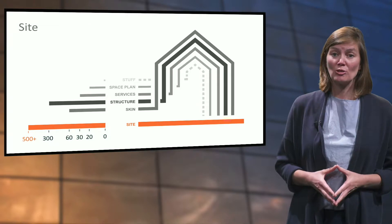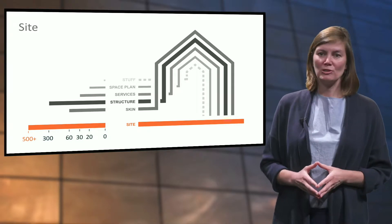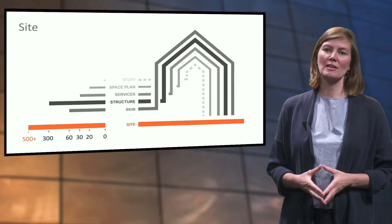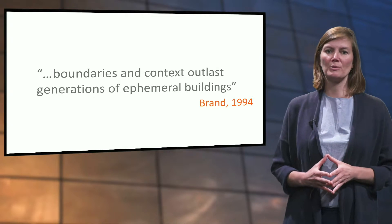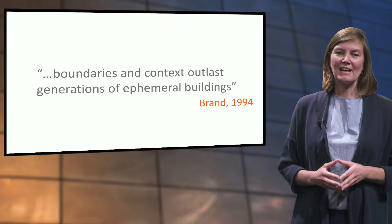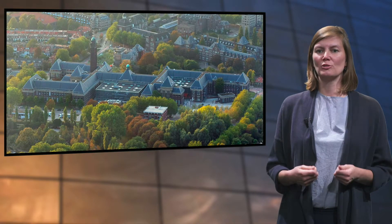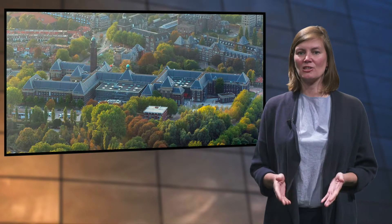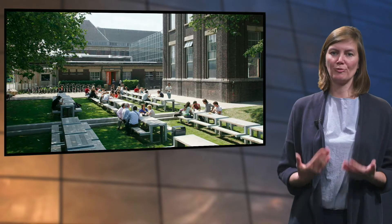The first layer is the site — the geographical setting in which the building is positioned. The site is eternal, states Duffy. Not only spatial aspects play a role, but also climatic, social, cultural and economic aspects. According to Brandt, the site's boundaries and context outlast generations of ephemeral buildings. BK City is part of the oldest area of the campus of Delft University of Technology in the Netherlands. The iconic building has a strong visual relation with all the surrounding university buildings, serving as a spatial and social anchor connecting the university campus with the rest of the city. As a designer, you can influence the sustainability and comfort of a building by taking the climate of the site into account at the start of the design. The orientation towards the sun, the size of the building's footprint or the shape of the volume are all aspects that influence the performance of a building and its site.